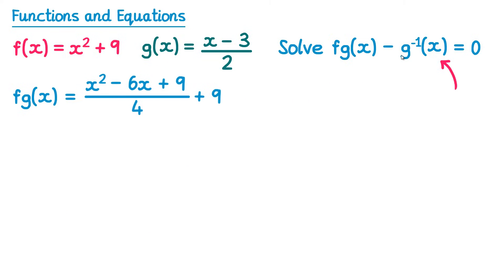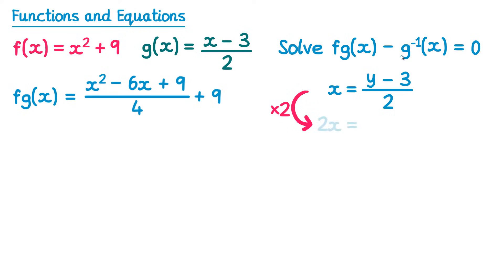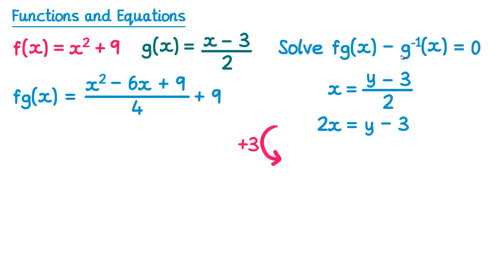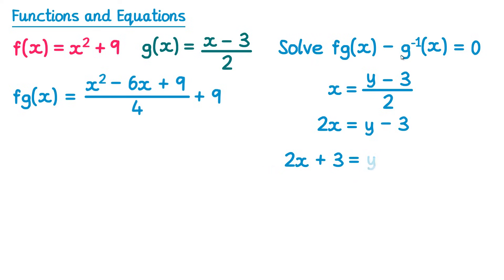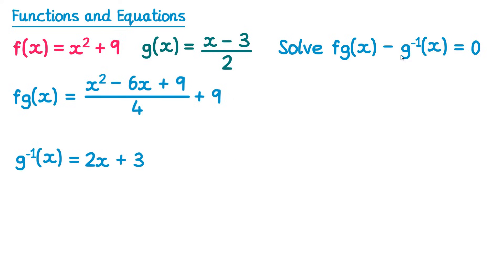Now let's find the inverse function g⁻¹(x). We write g(x) as y = (x − 3)/2, then swap x and y to get x = (y − 3)/2. Rearranging: multiply both sides by 2 to get 2x = y − 3, then add 3 to both sides to get y = 2x + 3. So g⁻¹(x) = 2x + 3.